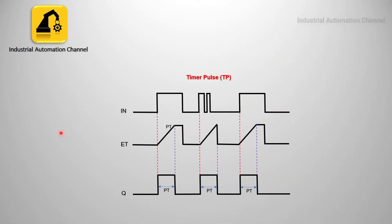Here we can see the function diagram of the pulse timer. This function is sensitive to the rising edge of the signal. If I press start, the output turns on and elapsed time starts counting. As soon as elapsed time reaches the preset time, the output turns off. Whenever I turn off start again, the elapsed time resets to 0. Even if the input is turned on and off during timing, the elapsed time continues to count, and the repeated input changes have no effect.